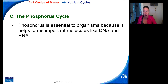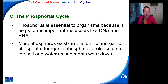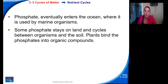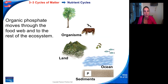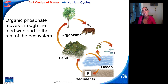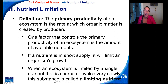The phosphorus cycle is also important. Phosphorus helps form important molecules like DNA and RNA. Most phosphorus exists as inorganic phosphate, which is released into soil and water as sediments wear down. Phosphate eventually enters the ocean where it is used by marine organisms, and some phosphate stays on land and cycles between organisms and the soil. Plants bind phosphates into organic compounds, and organic phosphate moves through the food web. On land, it is taken up by the roots of plants, eaten by consumers, and when organisms die, it is brought back full circle.